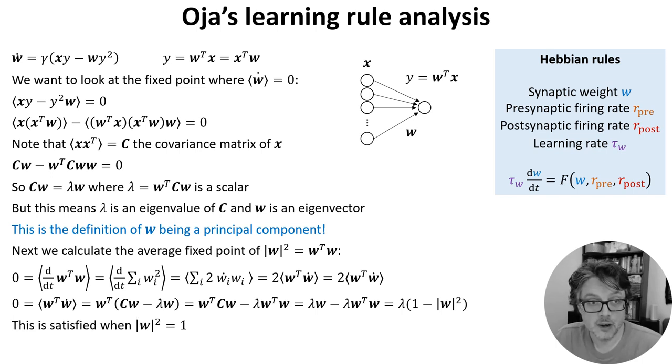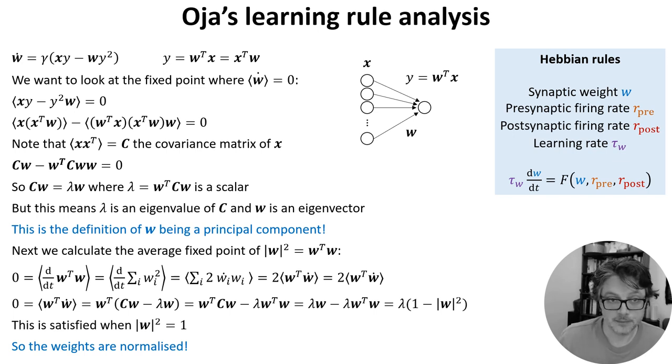Expanding the derivative out using the formula we calculated above, we get a second lambda term appearing, and this simplifies to lambda times 1 minus the norm of W. Now, for this to be zero, the norm of the weights must equal 1. In other words, Oja's rule gives us weight normalization. It always converges to some fixed value of the norm of W.